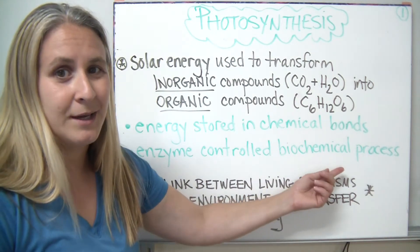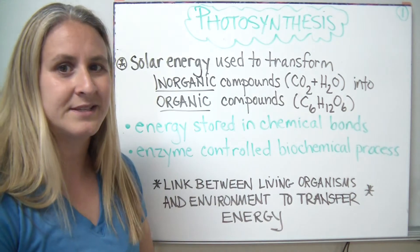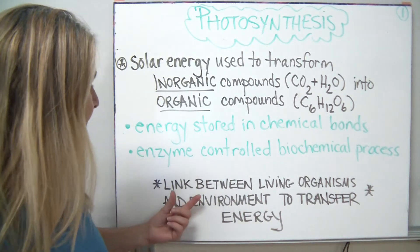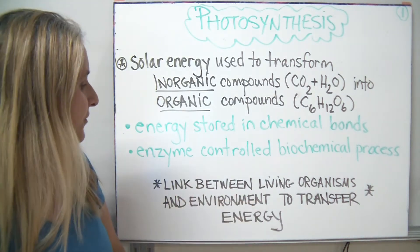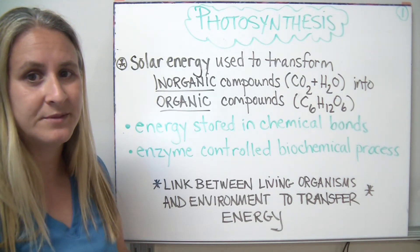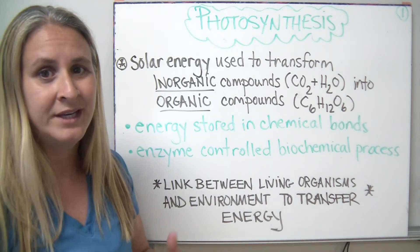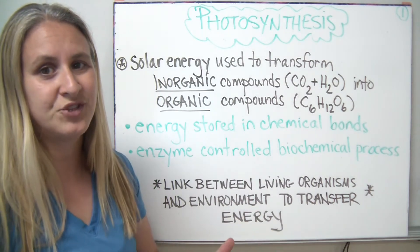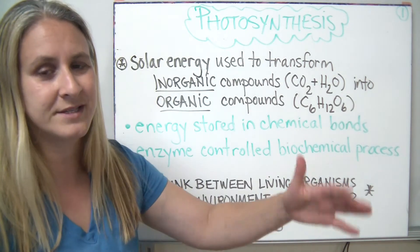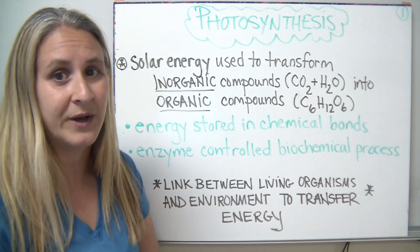Bio meaning living, and we're dealing with chemicals — it's a process that occurs in a living thing. This whole process of photosynthesis is really the link between living organisms and their environment, transferring energy from the environment into the food chain so that we can start the process of energy transfer from one organism to the next through the energy pyramid and through the food webs.